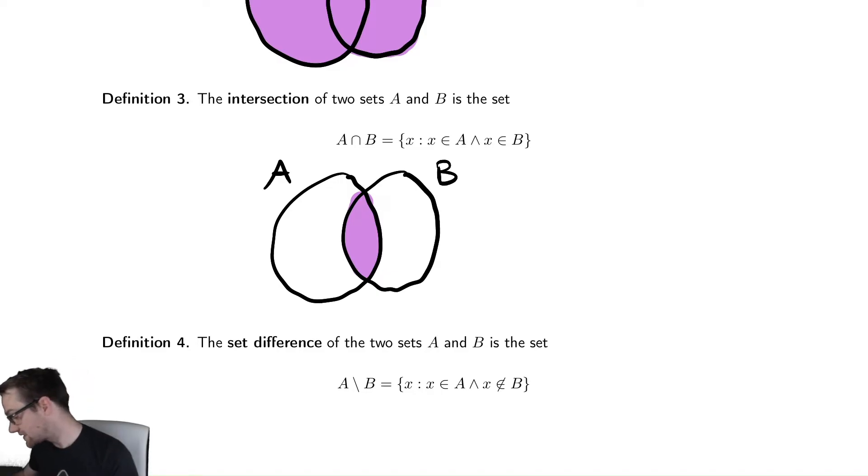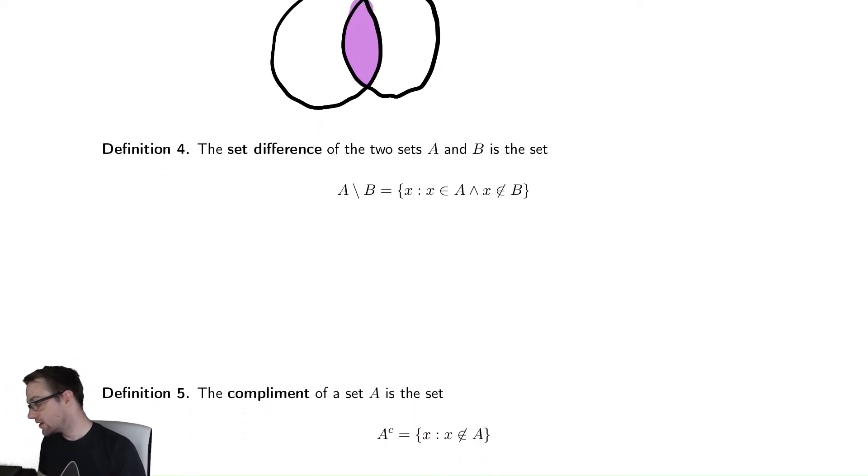Our next thing is the set difference, which is taking one set and removing everything from another set from it. So, again, with a Venn diagram,